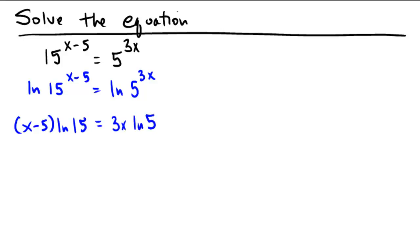Okay, next I'm going to use a distributive property on the left, so I'd get x ln 15 minus 5 ln 15 equals 3x ln 5.